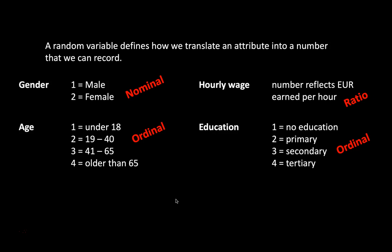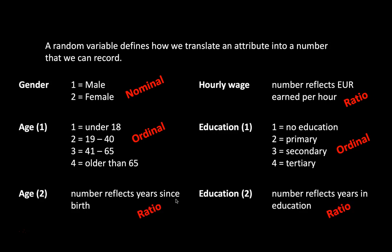These are choices. How you code a particular attribute into a number is a choice — we can choose different encodings. For example, for education, instead of coding whether somebody has no education, primary, secondary, or tertiary, we could have decided to measure the number of years in education, and then we suddenly have a ratio variable: we can say somebody has been twice as long in education as somebody else. Similarly with age, we could have decided to just record the number of years since birth — which is normally how we think about age — and then we have a ratio-level variable rather than an ordinal-level variable. So it is a choice of the researcher how to code it.